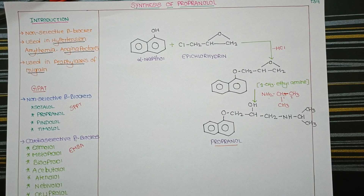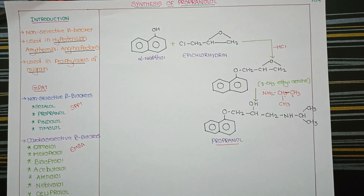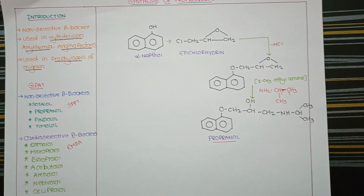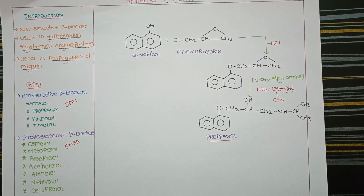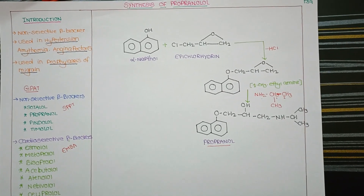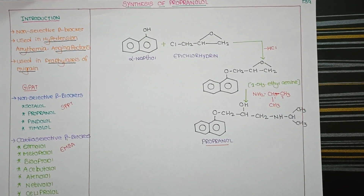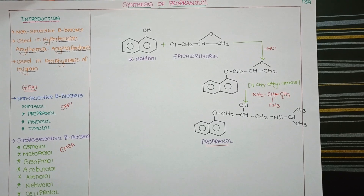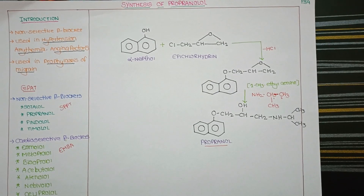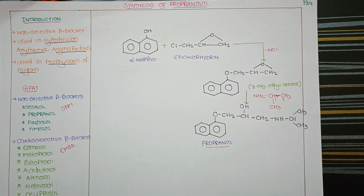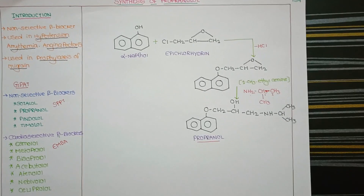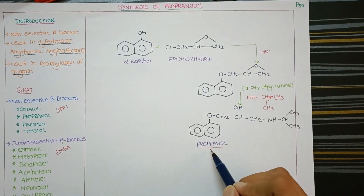For GPAT: non-selective beta blockers — CPPT — are sotalol, propranolol, pindolol, timolol. Selective cardioselective beta blockers are esmolol, metoprolol, bisoprolol, betaxolol, atenolol, acebutolol, nebivolol, celiprolol. For synthesis: alpha-naphthol reacts with epichlorohydrin, HCl is lost, and the intermediate is treated with isopropylamine to form propranolol.